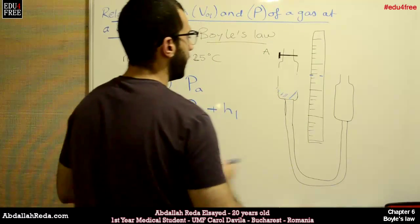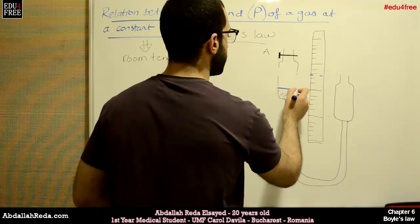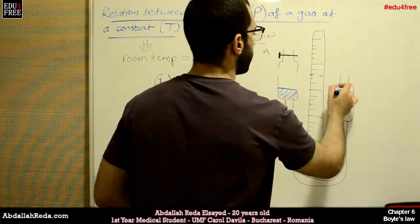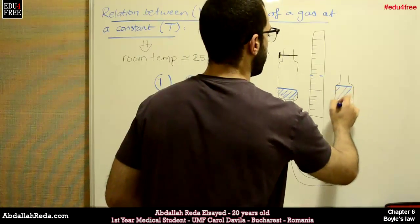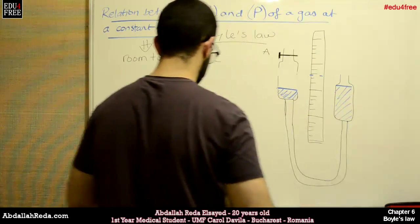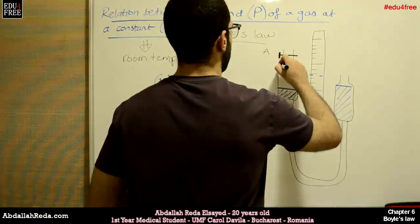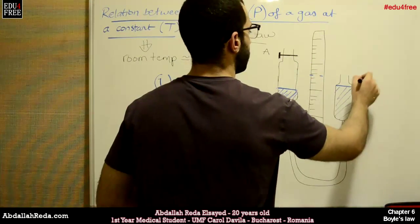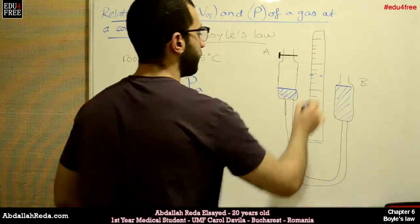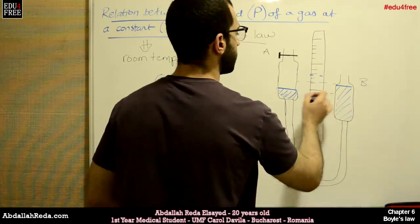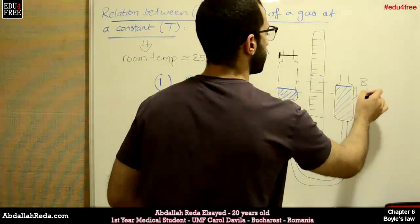The level of mercury in burette A will decrease. On the other hand, it will increase in burette B. And again, we will have a height difference. This, let's call it H2.